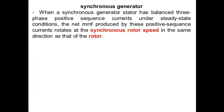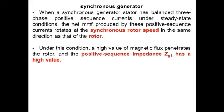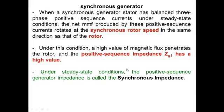In case of a synchronous generator, the positive sequence current will rotate with synchronous rotor speed in the direction of the rotor. The value for the positive sequence impedance Zg1 will have a higher value because of the higher magnetic flux penetration. Under steady state condition, the positive sequence generator impedance is called the synchronous impedance.